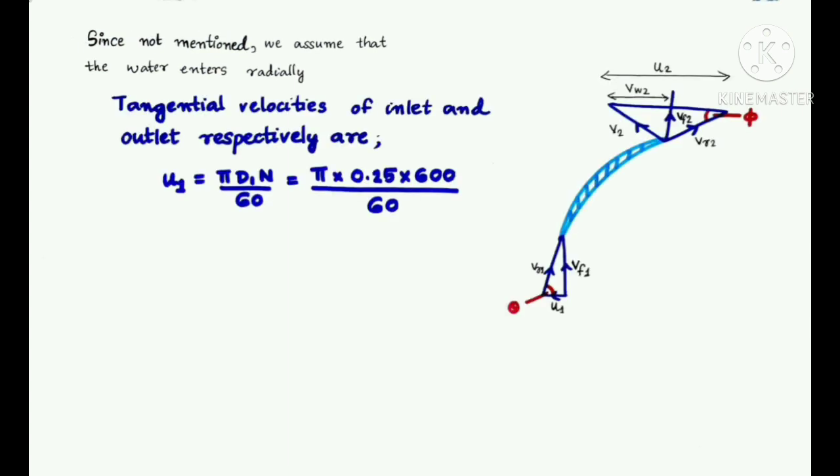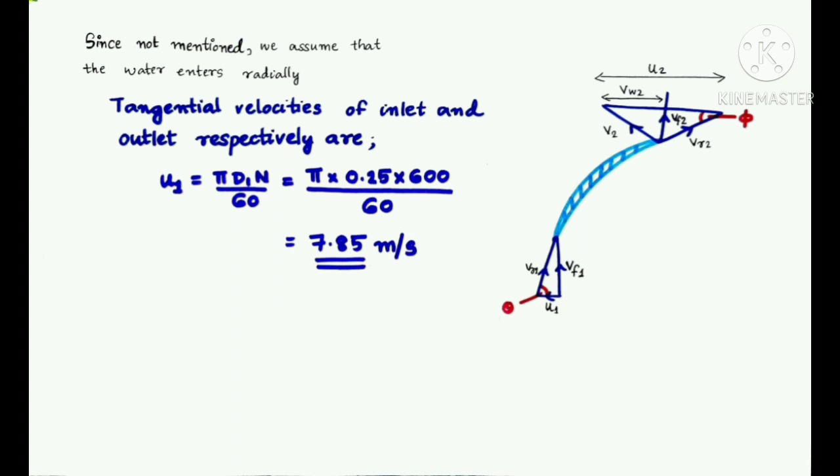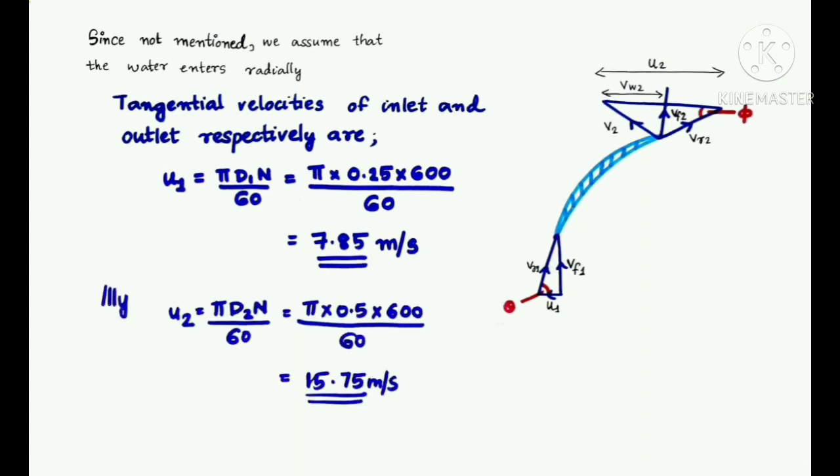First, let us find the tangential velocities at inlet and outlet. U1 is the tangential velocity at inlet and is given by πD1N/60. Substituting the values, we get the value of U1 as 7.85 m/s. Similarly, we get the value of U2, that is the tangential velocity at outlet, as 15.75 m/s.